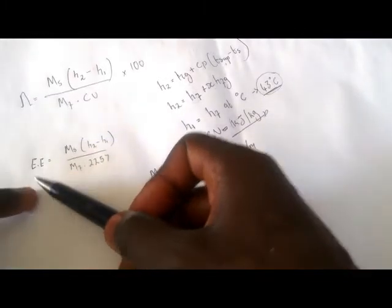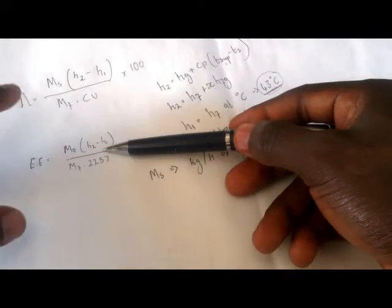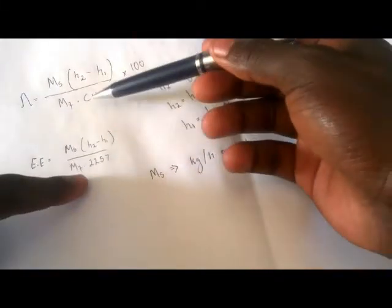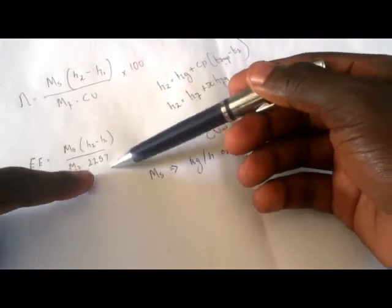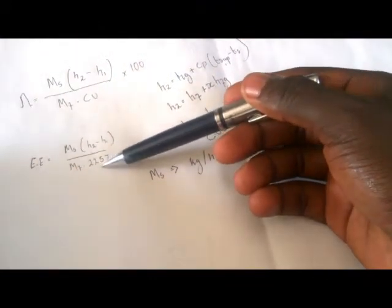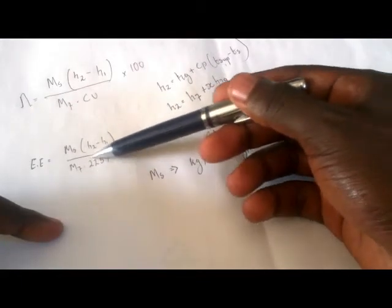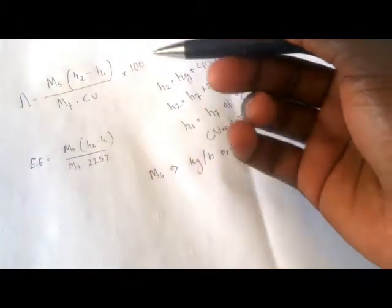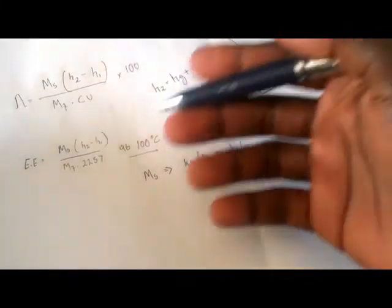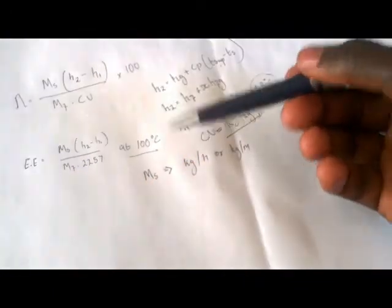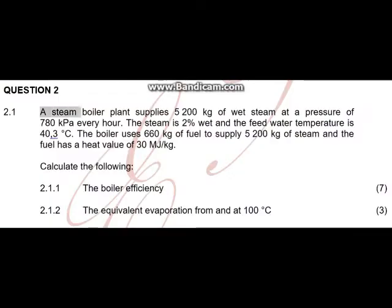When you calculate the equivalent evaporation, it uses the very same formula — the only difference is that instead of the calorific heat value, you use the constant 2257. This 2257 is always constant when calculating equivalent evaporation. Also, the equivalent evaporation is always referenced at 100 degrees Celsius.